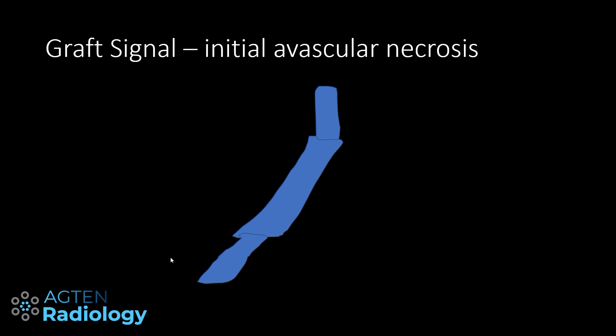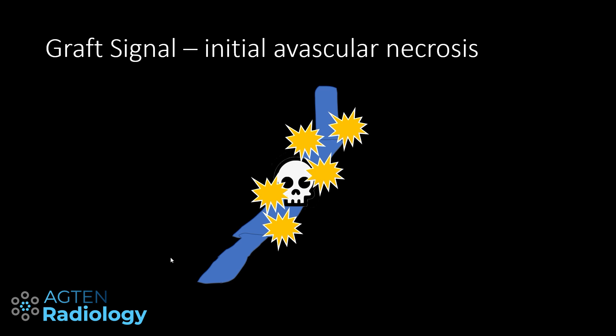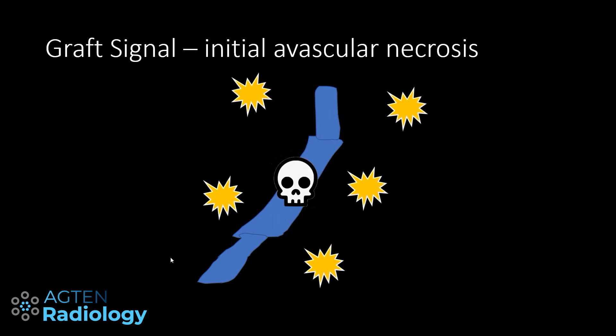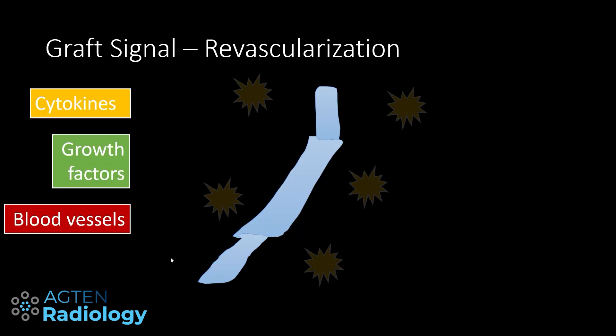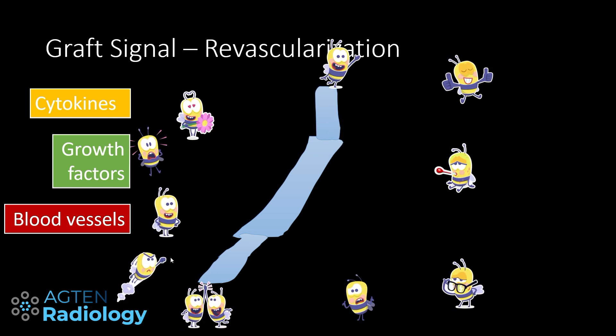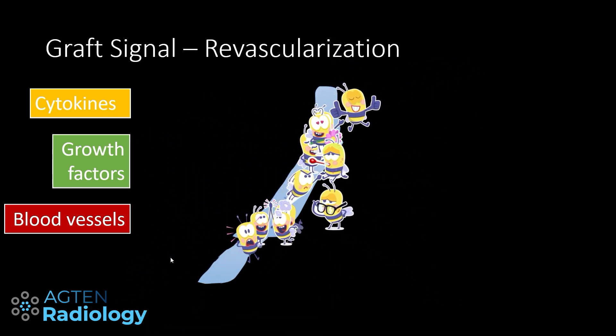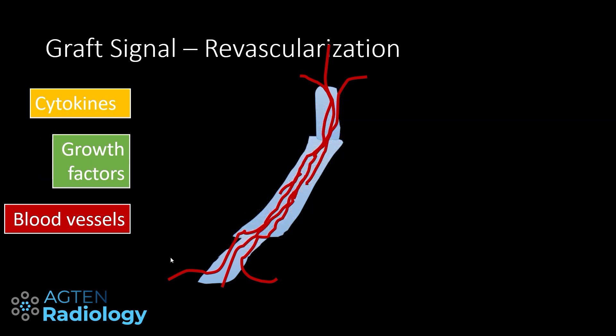With avascular necrosis, you take living tissue out of somewhere and put it somewhere else, so it will die. Once avascular necrosis occurs, cytokines are produced and diffuse out of that material, inducing growth factors to come back in. These growth factors allow the graft to mature and heal and ultimately lead to ingrowth of blood vessels — the so-called revascularization phase.